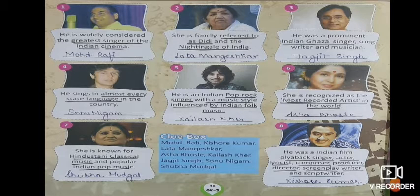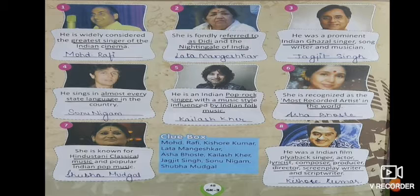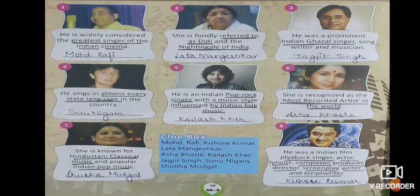Fifth: he is an Indian pop rock singer with a music style influenced by Indian folk music — Kailash Kher. Sixth: she is recognized as the most recorded artist in the world — Asha Bhosle.